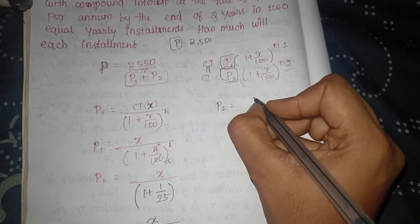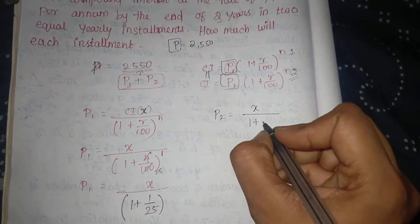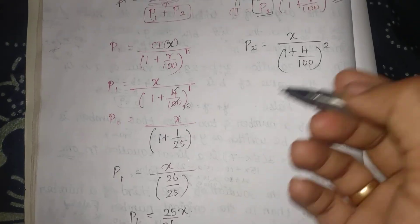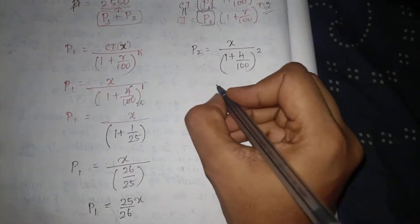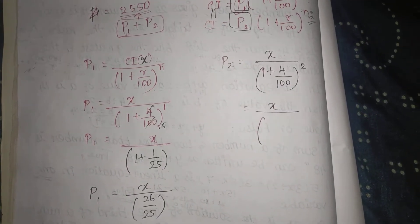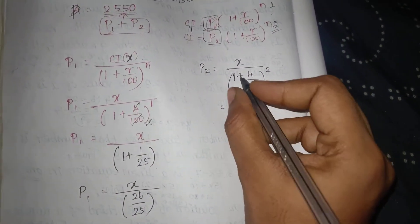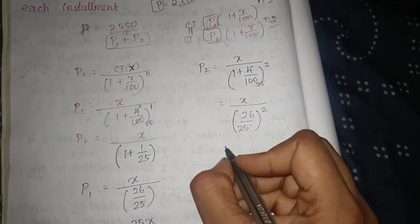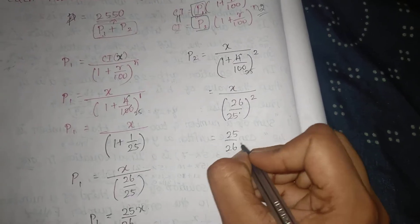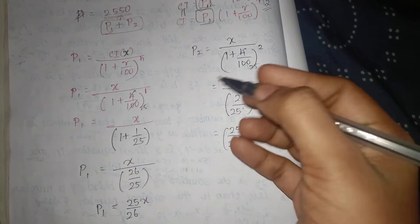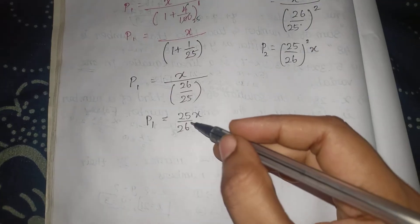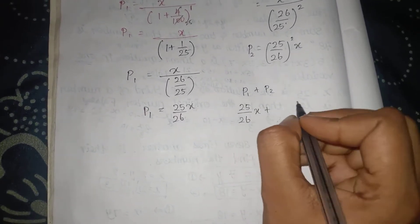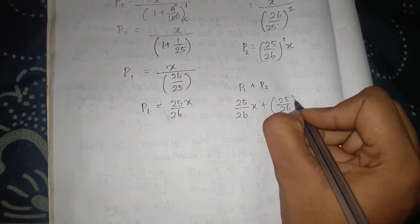P2 equals x divided by (1 + 4/100)^2. So P2 = x divided by (26/25)^2, which equals (25/26)² × x.